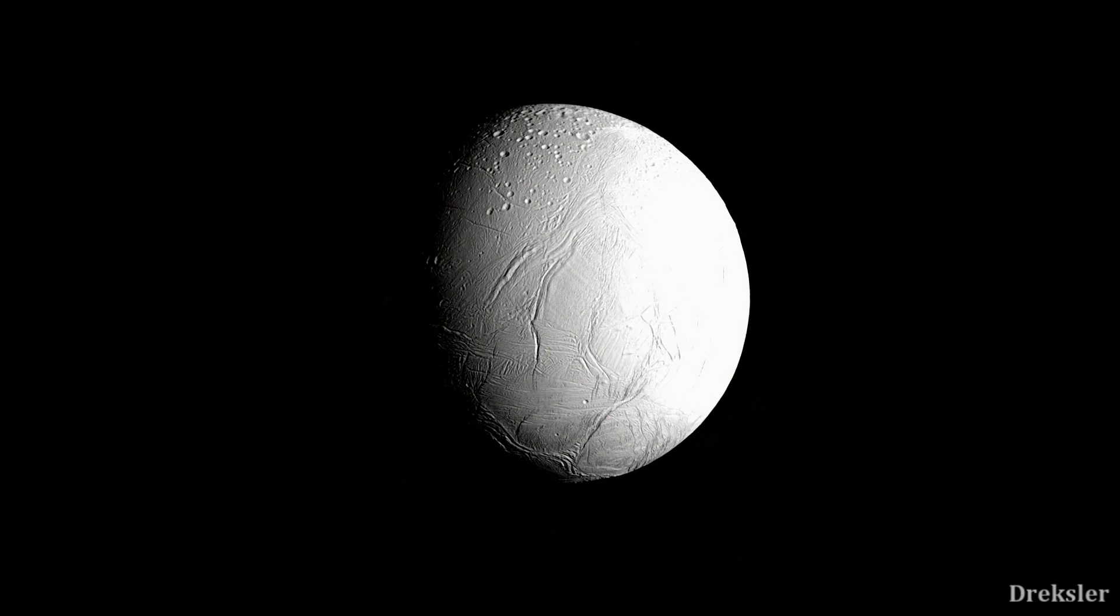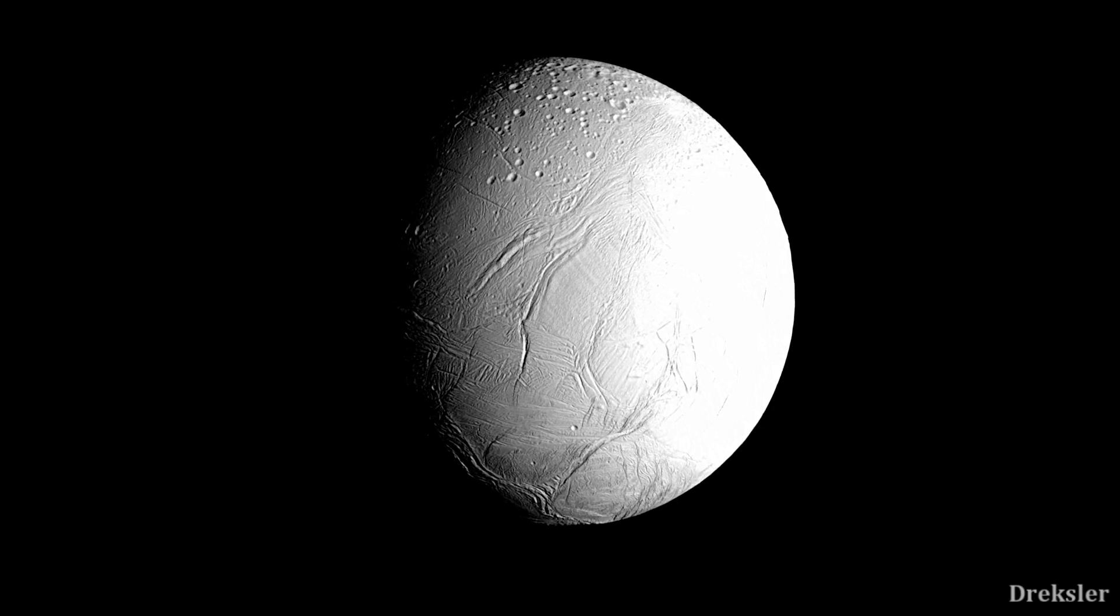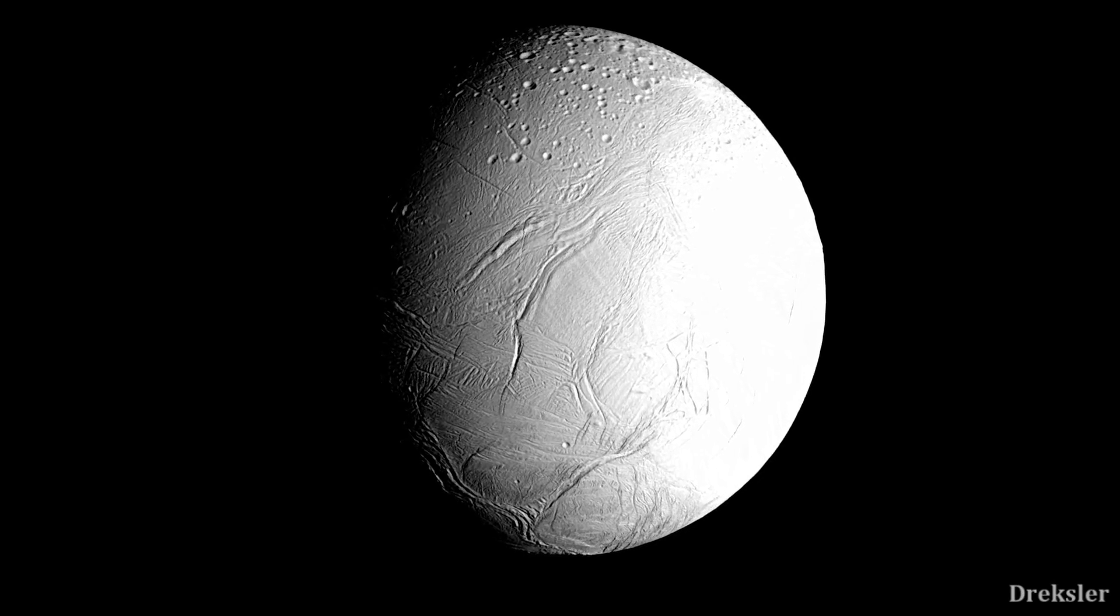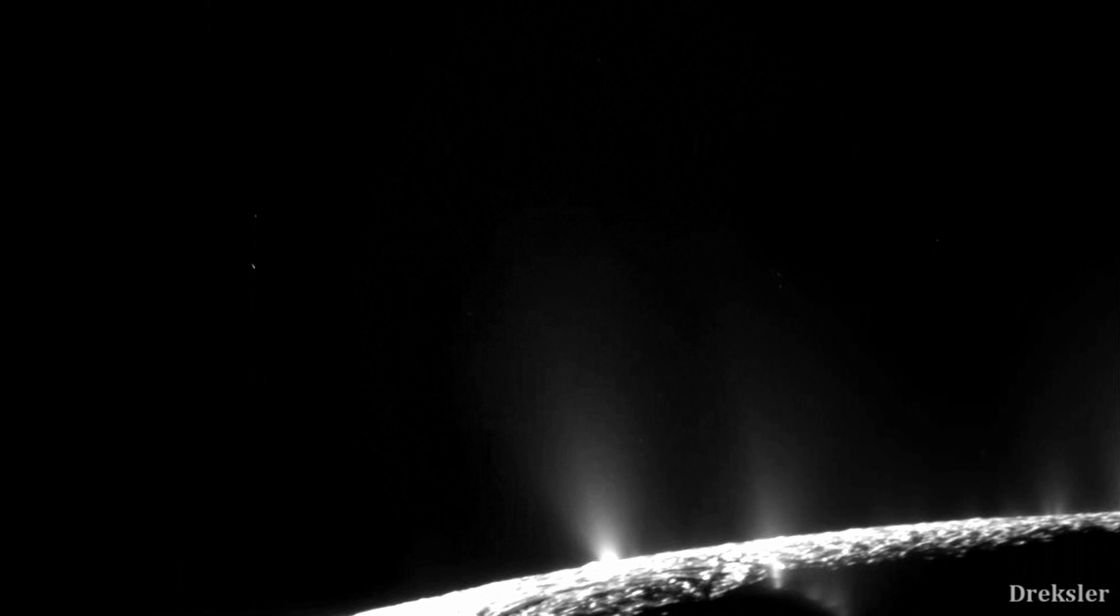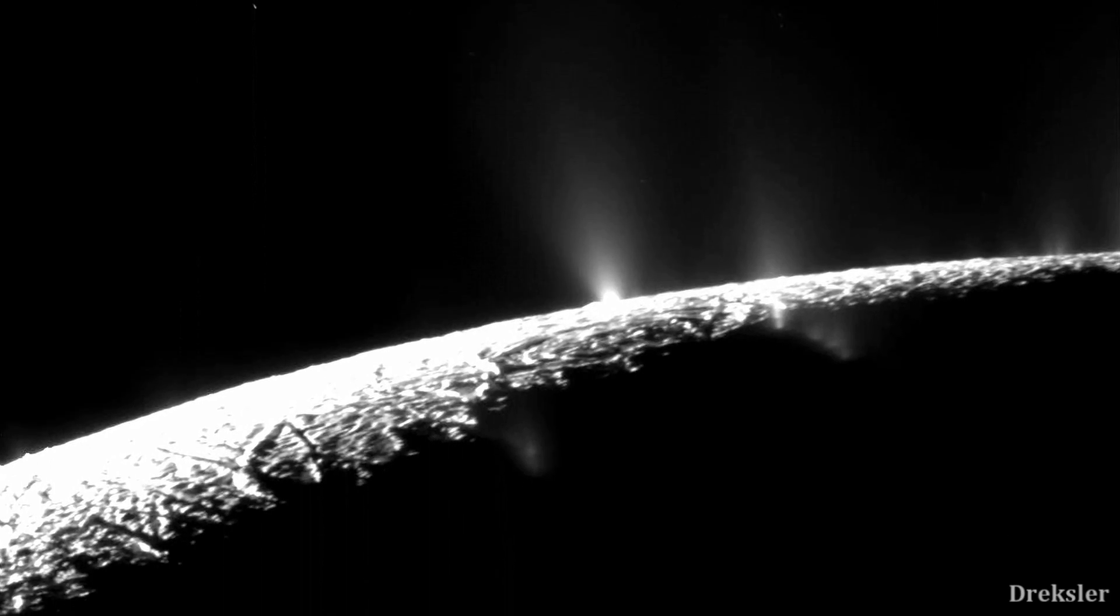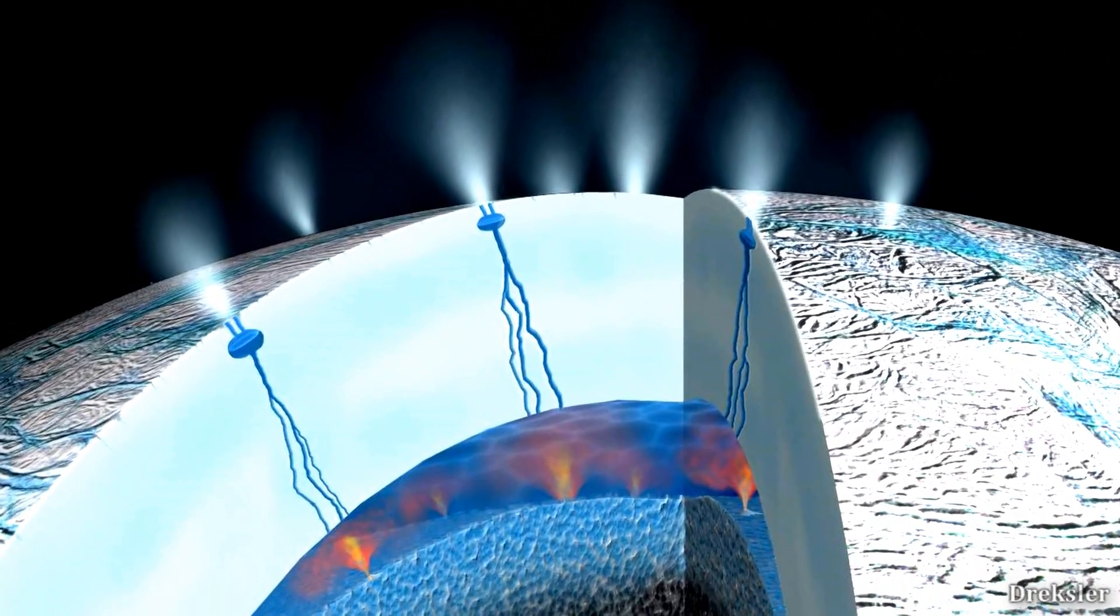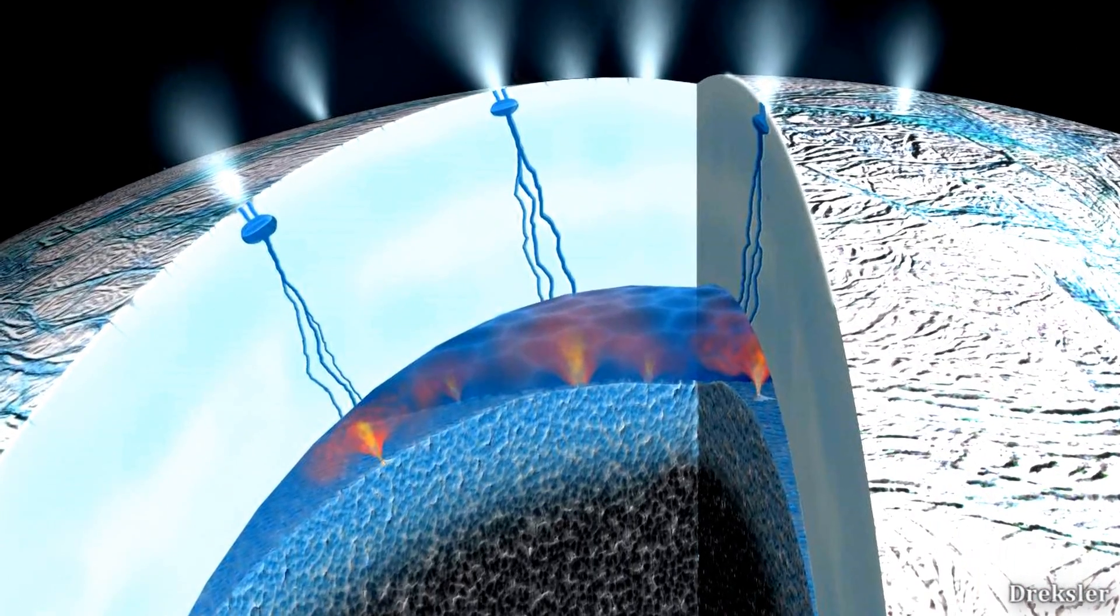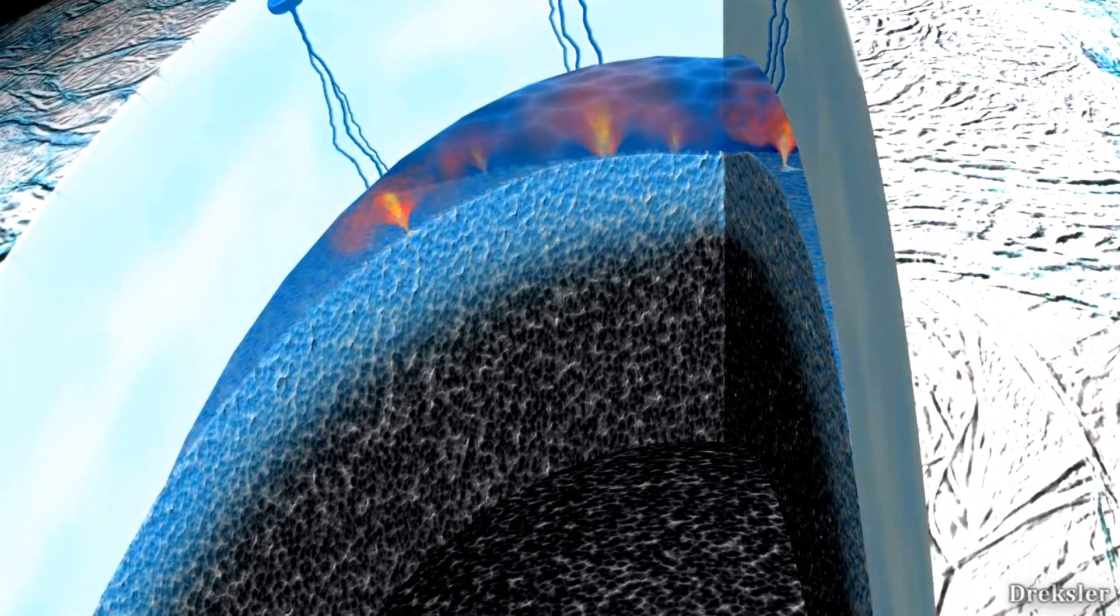Next is Enceladus, a moon of Saturn, which is very tiny. It has a surface area similar to that of Chile. Now this tiny moon is constantly spewing water into the air, it is losing around 200 kilograms a second. And due to its flexibility in water, it is kind of obvious that there is an ocean underneath the crust. Through inspecting the water that was spewed, we know it has a variety of molecules in it, which indicates a good chance of life existing there.